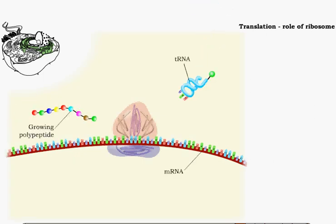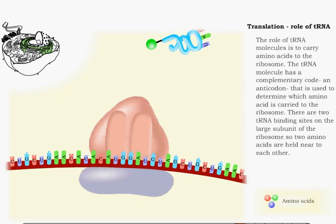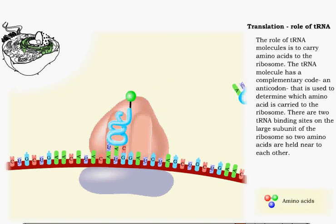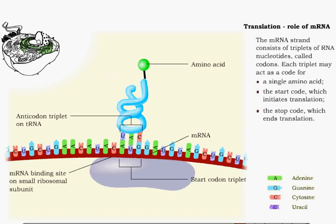A single ribosome consists of two components that bring together mRNA and amino acids. Its purpose is to allow for the reading of the sequence within mRNA, resulting in a sequence of amino acids. The role of the tRNA molecule is to move amino acids close together within the ribosome. Triplets of RNA nucleotides, called codons, on the mRNA molecule determine the sequence of amino acids.